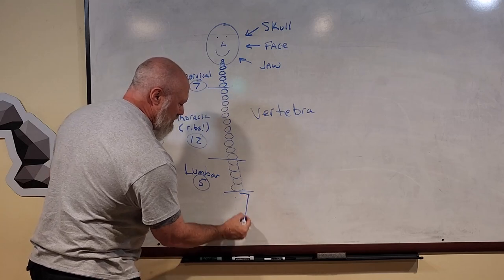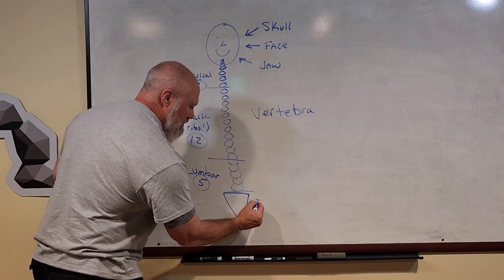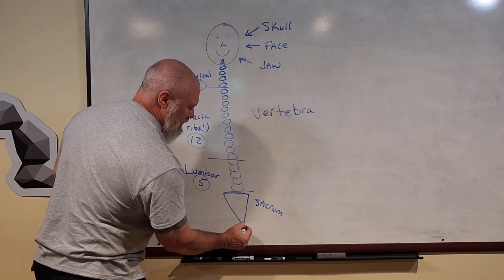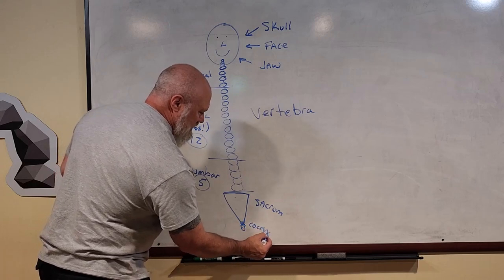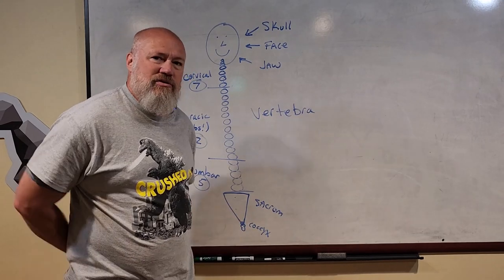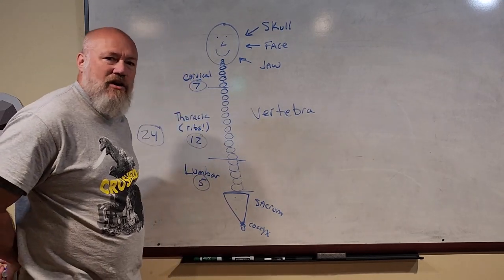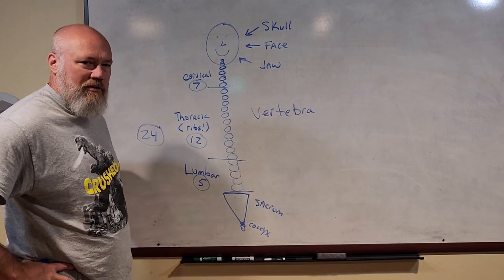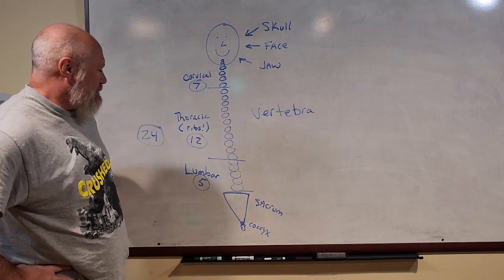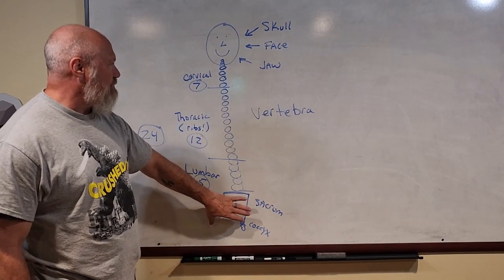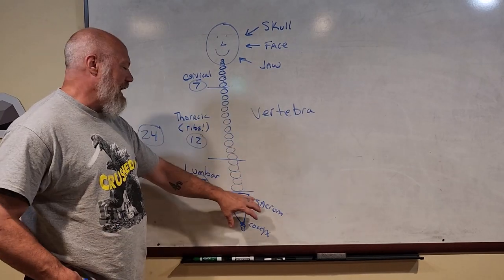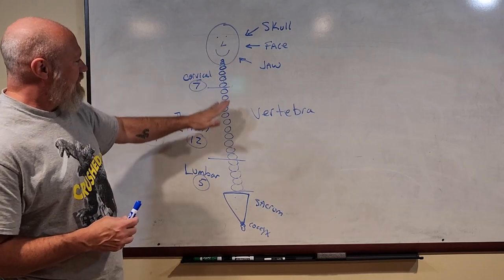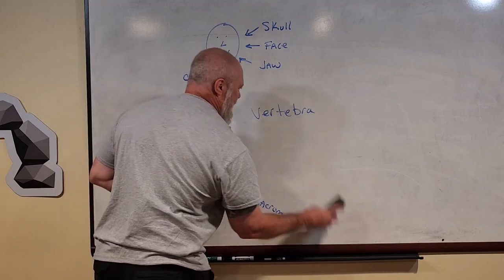Below the lumbar vertebrae there is a triangle-shaped wedge bone called the sacrum. Below that is a small bone called the coccyx — your tailbone. When you sit down, your sacrum and coccyx hold your pelvis. Your pelvis attaches to both sides of the sacrum, allowing you to append or hang your lower limbs to your axial skeleton.